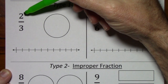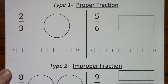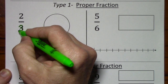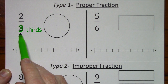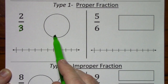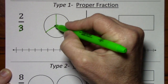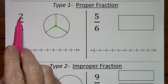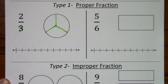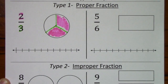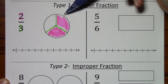If I want to represent two-thirds with this shape, I first pay attention to the denominator. This tells me I want thirds, so I need to divide this shape into thirds. Now that it's divided into thirds, the numerator tells me how many thirds I have. So I have two-thirds — I'll shade in two-thirds, and I've represented two-thirds with this shape.